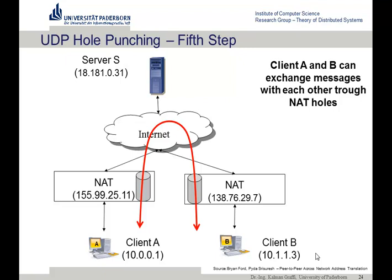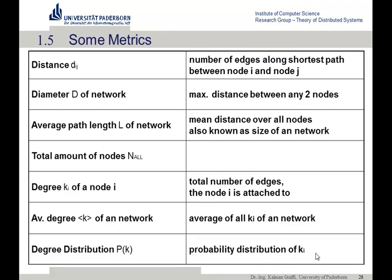Next, we will look at some specific metrics that typically occur in peer-to-peer overlays and peer-to-peer networks that you should know. First, what's quite relevant in peer-to-peer overlays is the distance. I will introduce these metrics because then we come up with some nice properties. The first metric is the distance between two nodes, which is basically the shortest path.